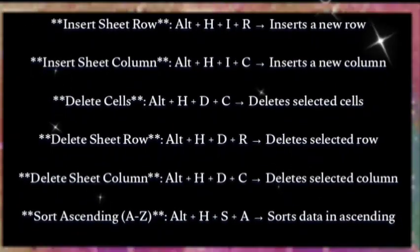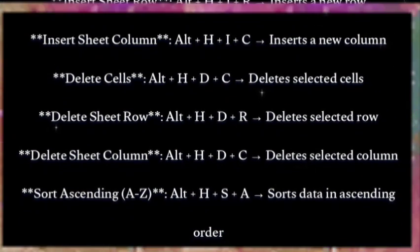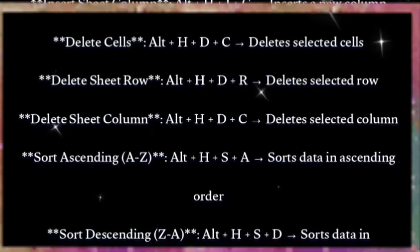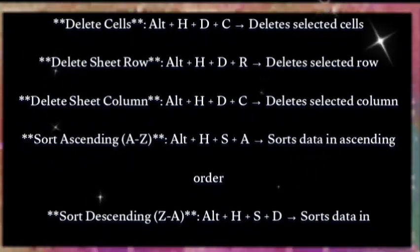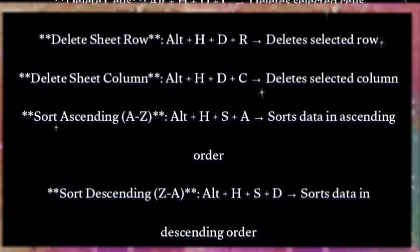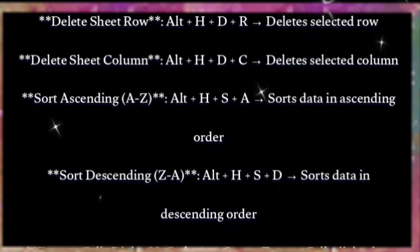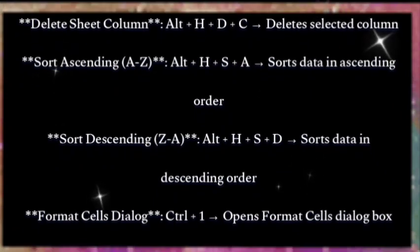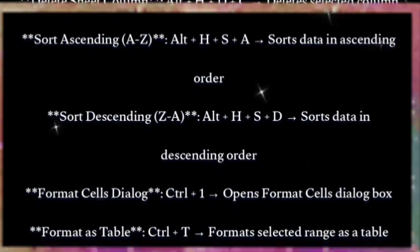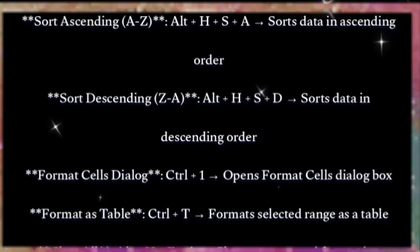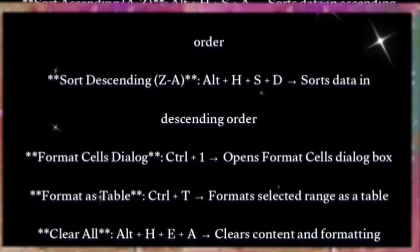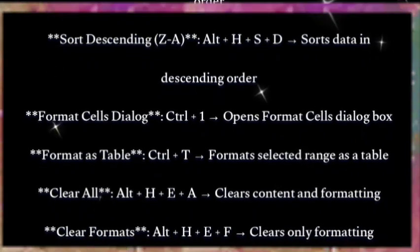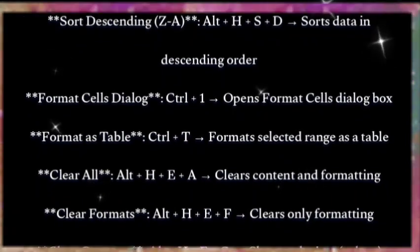Sort ascending A to Z: Alt+H+S+A — sorts data in ascending order. Sort descending Z to A: Alt+H+S+T — sorts data in descending order.